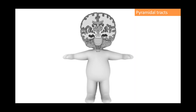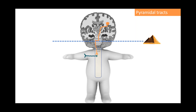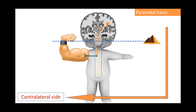To study these pyramidal tracts, we are going to use our X-ray vision to look inside this patient's body. The pyramidal tracts originate in the cortex and their fibers travel all the way down. At the pyramidal decussation, these fibers cross the midline to the other side of the body, then continue down to connect to a second neuron, which connects to the muscles to establish muscular contraction. We can conclude that the pyramidal tracts are responsible for motor control of the contralateral side of the body.